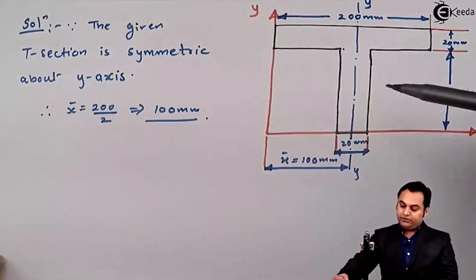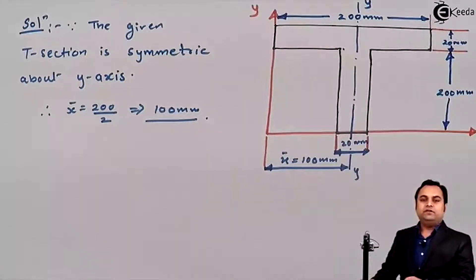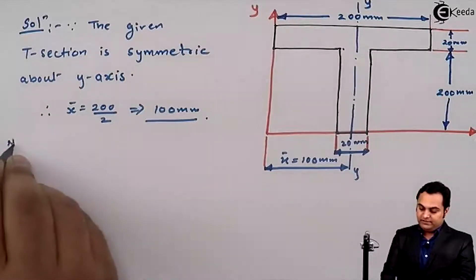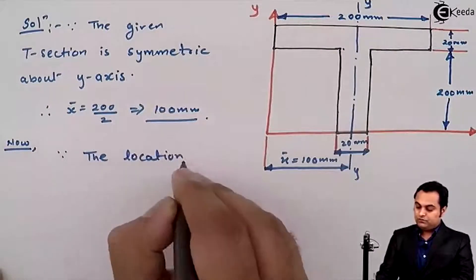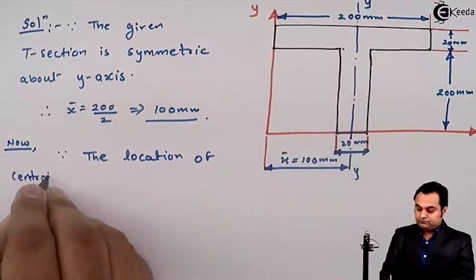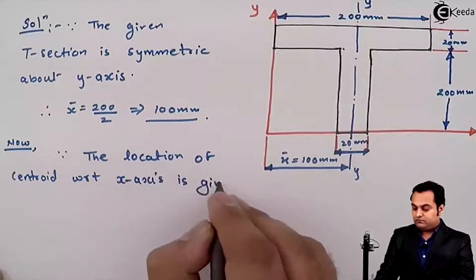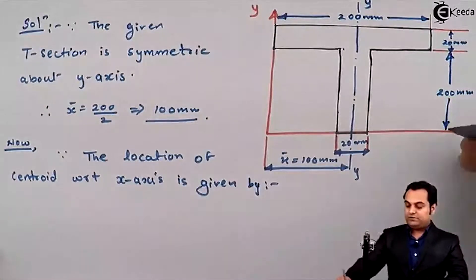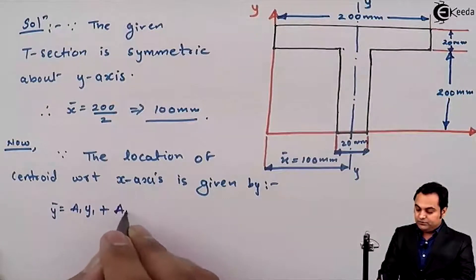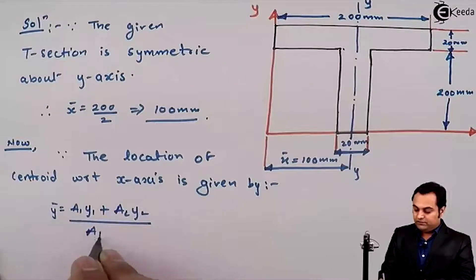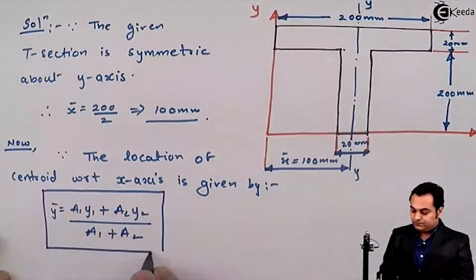Once we know x-bar, we know the centroid lies on the Y-axis, but we still need to find its height. For that we require y-bar. The location of the centroid with respect to the X-axis is given by: y-bar = (A1·y1 + A2·y2) / (A1 + A2). I'll keep this as equation number 1.